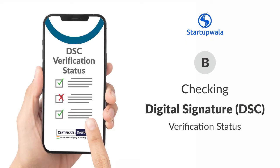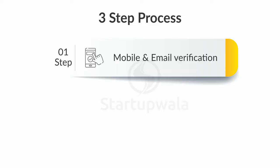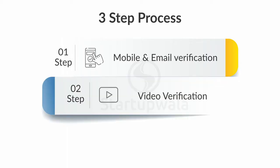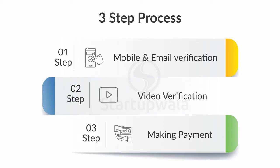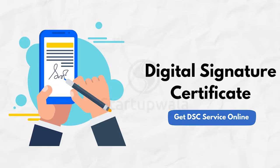In this video, we will show you how to check the status of your digital signature application progress. The digital signature verification process involves 3 steps. The first step is to complete mobile number and email verification. The second step is to complete the video verification, and the third step is to make payment.